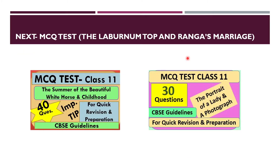This is a 9x9 explanation. You need to revise these MCQ tests — CBSE has included MCQ tests in the final exams, so these are very important. MCQ tests are ready for the chapters: 'The Summer of the Beautiful White Horse,' the poem 'Childhood,' 'The Portrait of a Lady,' 'A Photograph,' and coming up next is the MCQ test from 'The Laburnum Top' and 'Ranga's Marriage.' Now let's do the important questions from this poem.